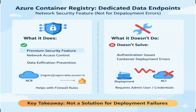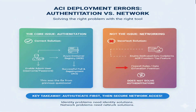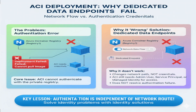However, the core issue in this scenario is authentication, not networking. Based on our previous questions in this series, we know that enabling the admin user was the correct solution for container deployment authentication. Dedicated data endpoints address completely different concerns — they help organizations create tighter firewall rules and reduce data exfiltration risks, but they don't resolve authentication failures when trying to pull images for container instance deployment. The deployment error occurs because Azure Container Instances cannot authenticate with the private registry to pull the image. Dedicated data endpoints change how data flows through the network but don't provide the authentication credentials needed for the deployment process. The container instance still needs proper authentication, like admin user credentials or managed identity, to access Registry 1, regardless of which data endpoints are used.